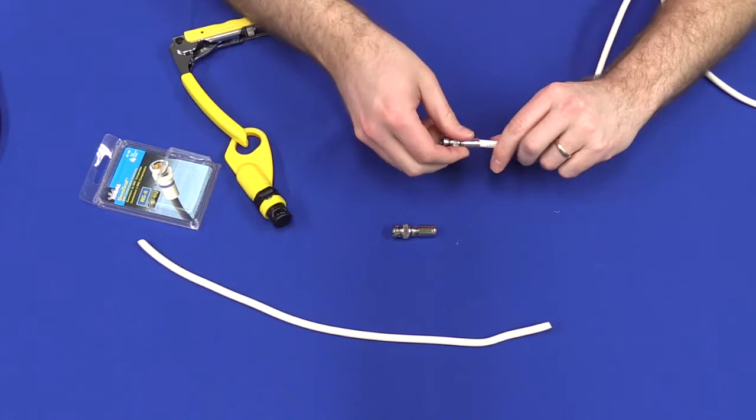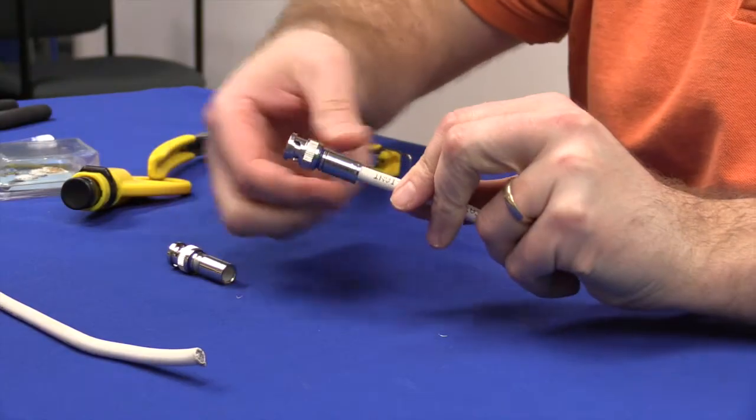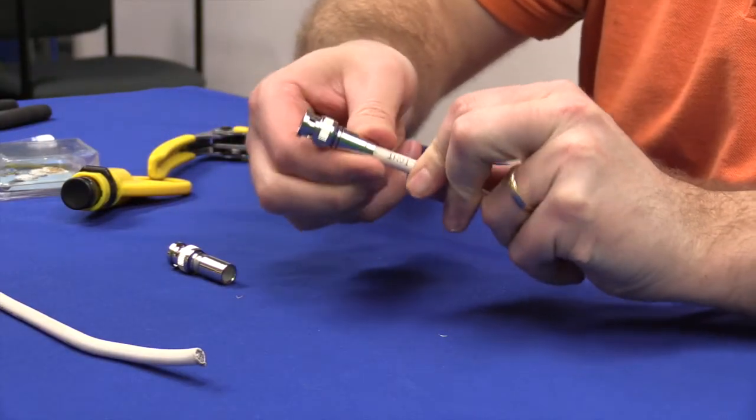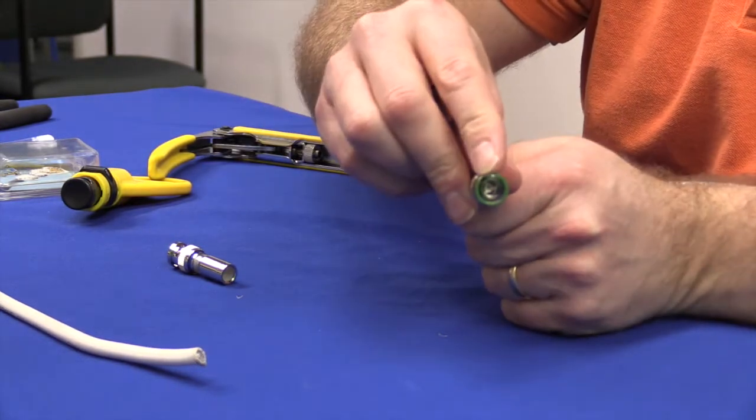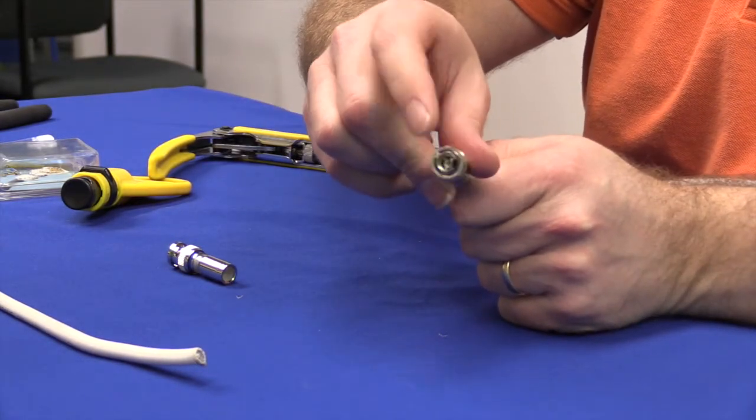Once you have squeezed it in there, you can see that it's been crimped on there, and it's going to hold. You can see the center copper wire through the BNC connector.